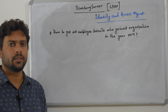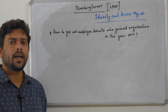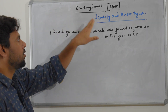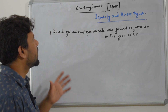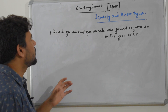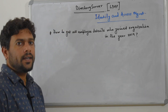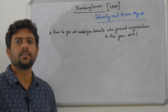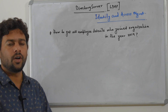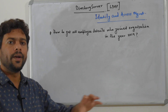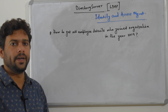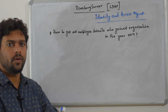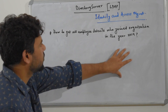Basically, all organizations — if you talk about financial organizations, banking organizations, or organizations which follow security standards — they have identity and access management infrastructure set up. Directory server is one of the very important components of this IAM. A directory server is also a type of database, but the underlying data structure differs — data is stored in a tree-like structure, whereas in a relational database you have rows, columns, and related tables.